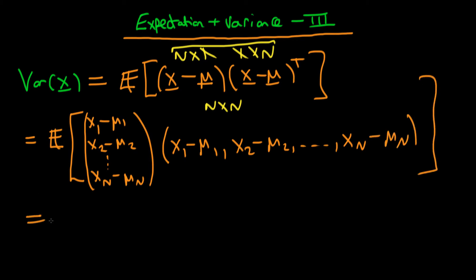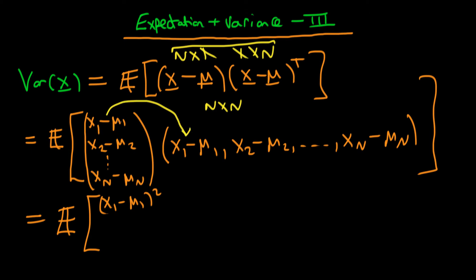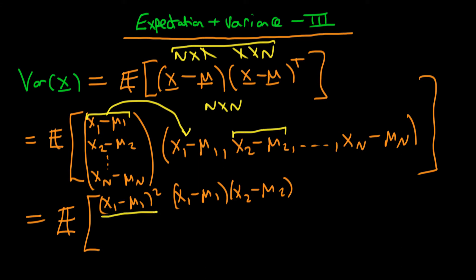Because this is just ordinary matrix multiplication, we can write this as the expectation of the matrix where the first element is (x1 minus mu1) squared, the next element in the first row is (x1 minus mu1)(x2 minus mu2), and so on. When we take the expectation of each component, the first diagonal element yields the variance of x1, and the off-diagonal element is defined as the covariance of x1 with x2.